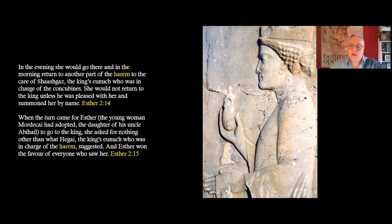We do know that eunuchs, these castrated men, were prominent players in the Persian court during the Achaemenid period, the 5th to the 4th century BCE. They are represented sometimes in art, as we see here from this relief from Persepolis in Iran — these beardless young men carrying purse-prune flasks and towels. They obviously play an influential part in the story of Esther, but perhaps that's for another time.